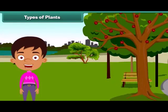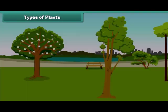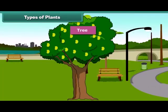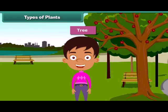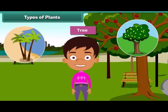Children, we often see different types of plants around us. We find that some of the plants are tall while some are small. Plants which are very tall and strong are called trees. For example, mango tree, coconut tree and neem are tall.